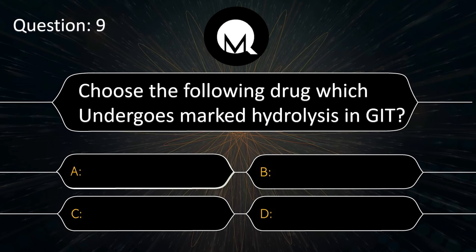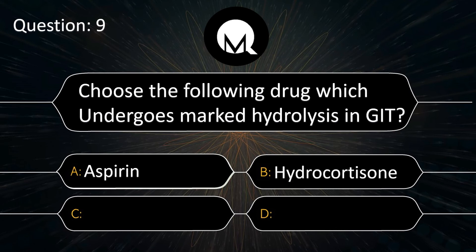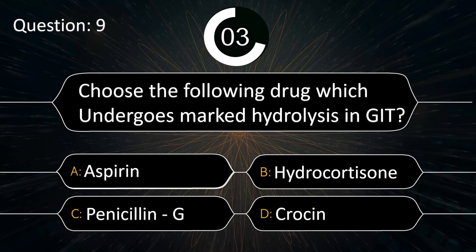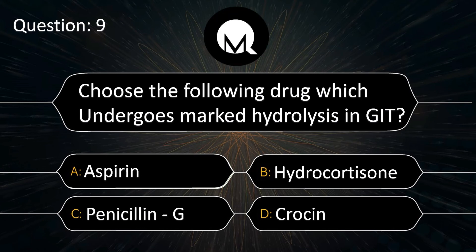Choose the following drug which undergoes marked hydrolysis in the GIT: Aspirin, Hydrocortisone, Penicillin G, or Crocin? The answer is Penicillin G.